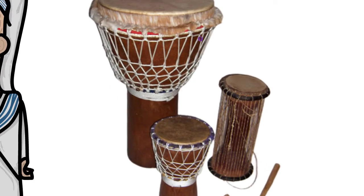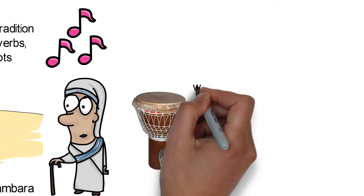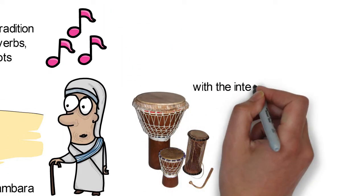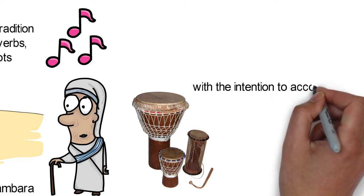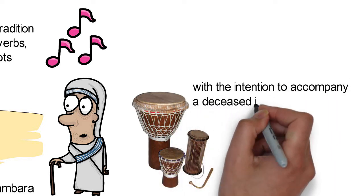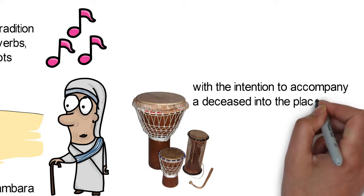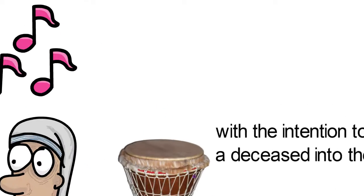The cora is a 21-stringed instrument made out of a halved, dried gourd covered with cow or goat skin. Its strings are made of fishing line. They play the cora to traditional songs with the intention to accompany a deceased into the place of rest.